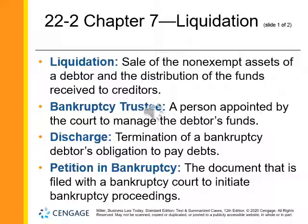A debtor in a liquidation bankruptcy turns all of their non-exempt assets over to a bankruptcy trustee — a person appointed by the court to manage the debtor's funds. The trustee sells the non-exempt assets and distributes the proceeds to creditors. With certain exceptions, debts are then discharged — extinguished — and the debtor is relieved of the obligation to pay them.